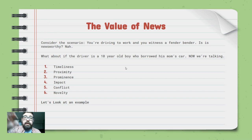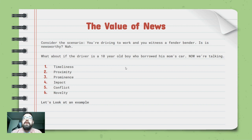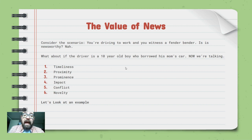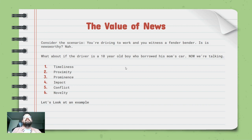So what are the news values? These will show up a lot in your assignments — write them down. Timeliness: is it new and recent? Proximity: is it close to the audience? Prominence: does it involve famous or important people? Impact: will it affect me as the reader? Conflict: is there a feud, a war, a battle? Novelty: is it something interesting you won't hear every day?